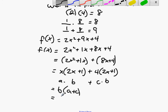Well, what's my b? My b is 2x plus 1. What's my a? It's x. What's my c? It's 4. So here we go. We now have f of x equals 2x plus 1 times x plus 4.